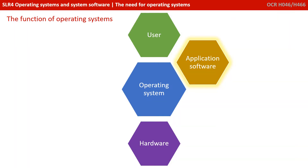The user doesn't tend to interact directly with the hardware, but instead they use application software such as word processors, spreadsheets, or graphics programs in order to accomplish a given task. It's the role of the operating system to provide a platform on which that application software can run.